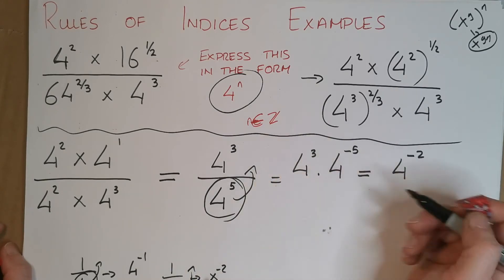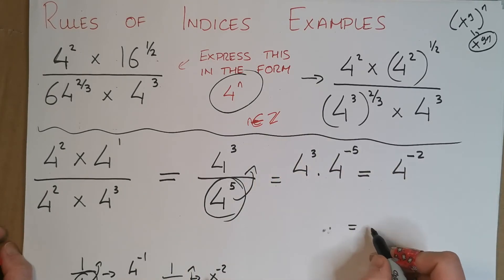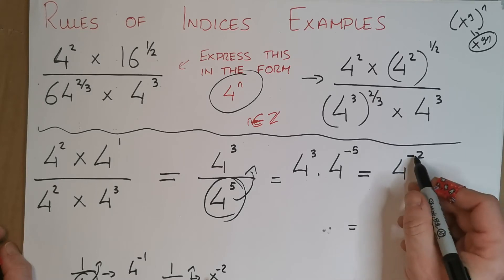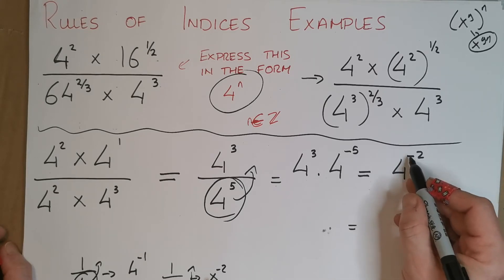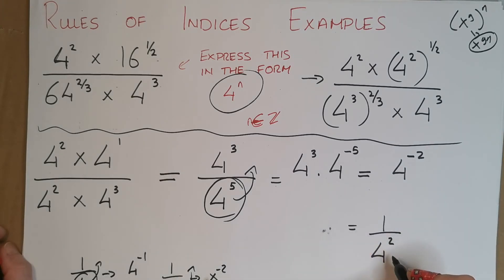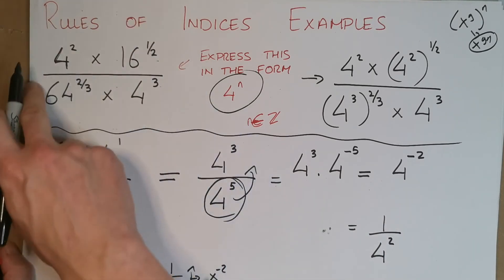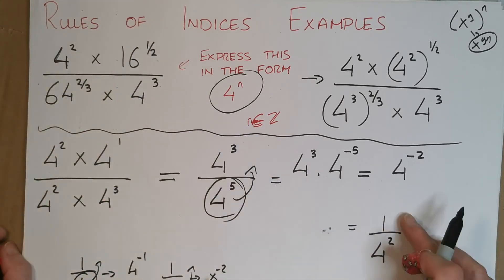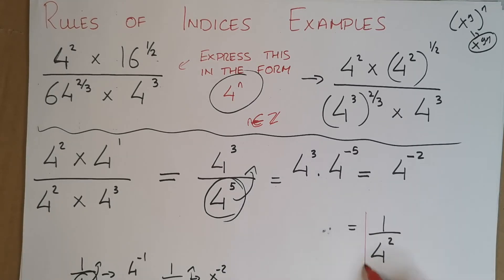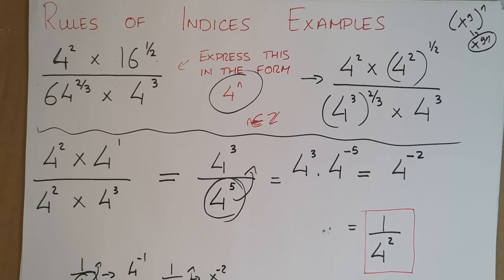If we needed n to be a natural number, we'd bring 4 to the power of minus 2 back under the line, giving 1 over 4 squared. If you put this all in your calculator you should get 1 over 16, which is what 1 over 4 squared is. Hopefully that made sense — as I said, if you want to do these to relax, I think that's a good idea because I enjoy them.